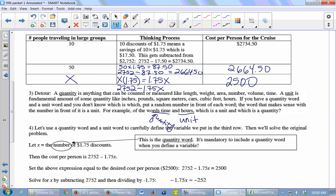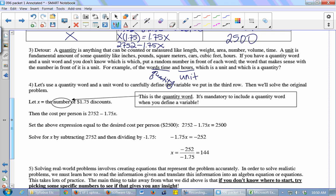So if I wanted to use a quantity word and a unit word to carefully define this X - I wrote X up here to represent the thing I didn't know - X is representing the number, that's the quantity word, of $1.75 discounts. So discounts is the unit. Number of discounts.